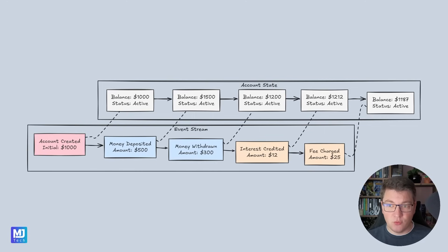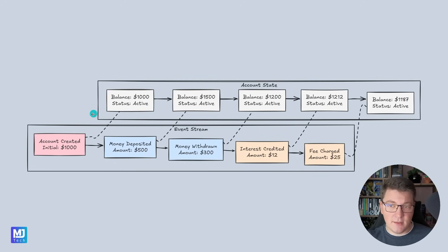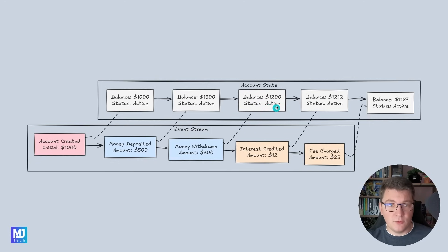This is one of the most important concepts to understand with event sourcing. We are never really storing the application state — we are only storing the events that represent the changes in state. In order to perform our business logic, we will need to calculate the application state at the current point in time. We do this by taking the stream of events from our database, often called an event store, and replaying the events one by one starting from a blank slate — the empty state of our bank account. So we would first apply the account created event, then the money deposited event, the money withdrawn event, and each of these events contain metadata telling us what happened to our aggregate, allowing us to determine the current state of the account.